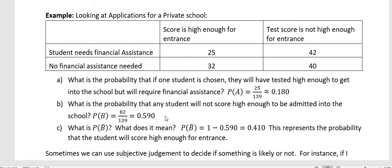The next question is: what is the probability of the complement of B, and what does it mean? We just found B, which was 82 over 139 or 0.590. The complement is just to subtract this amount from 1. So 1 minus 0.590 is 0.410.